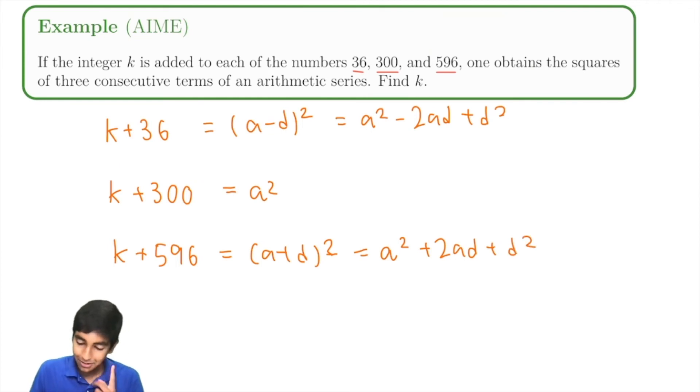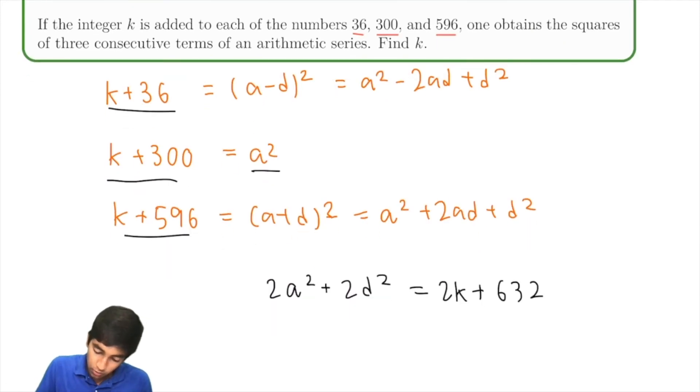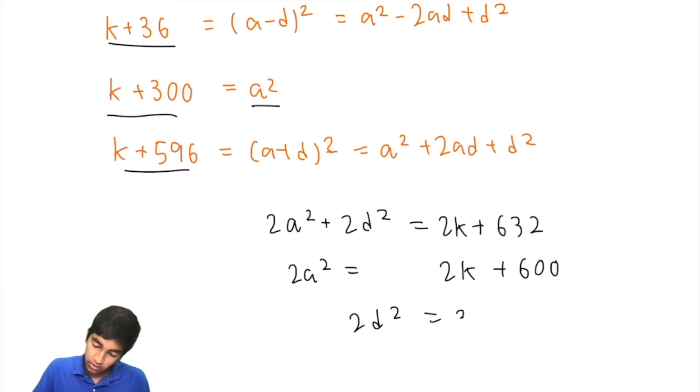We get a squared minus 2ad plus d squared over here. We have a squared plus 2ad plus d squared. If we add these up, they cancel. We add them up to get 2a squared plus 2d squared equals 2k plus 596 plus 36, which is 600 plus 32, plus 632. And we have a squared equals this. So, we have 2a squared equals 2k plus 600. So, 2d squared equals 32. d squared equals 16. d equals 4.